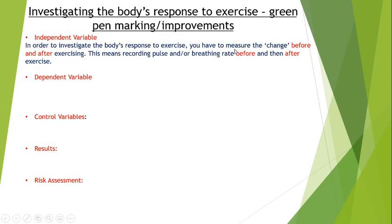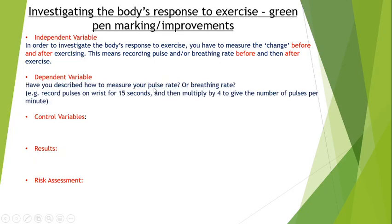This also gives rise to what the dependent variable is — what we're measuring. The measurement of this change would be the dependent variable. So physically measuring your pulse rate or breathing rate would be the dependent variable. But if you've put in your plan 'measure your pulse rate' but haven't said how, that's not good enough and will need green and blue pen corrections. To measure your pulse rate: fingers on your wrist or neck, count how many pulses you get in 15 seconds, then multiply by four to give you a rate per minute. Same for breathing rate — count breaths in 15 seconds and times by four to give breaths per minute.